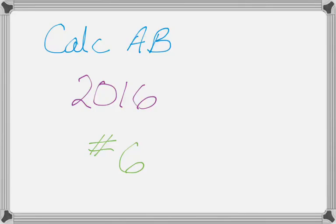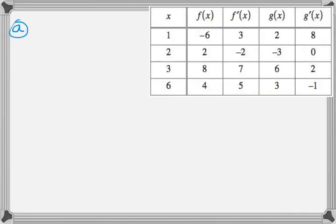Okay, in this video we're going to talk about number 6 from the 2016 Calc AB exam. It's a problem where you're given a table and asked some very straightforward questions about it. So let's see if we can do this. So here's your table. It's got f, f prime, g, g prime. We're told that f and g have continuous second derivatives.